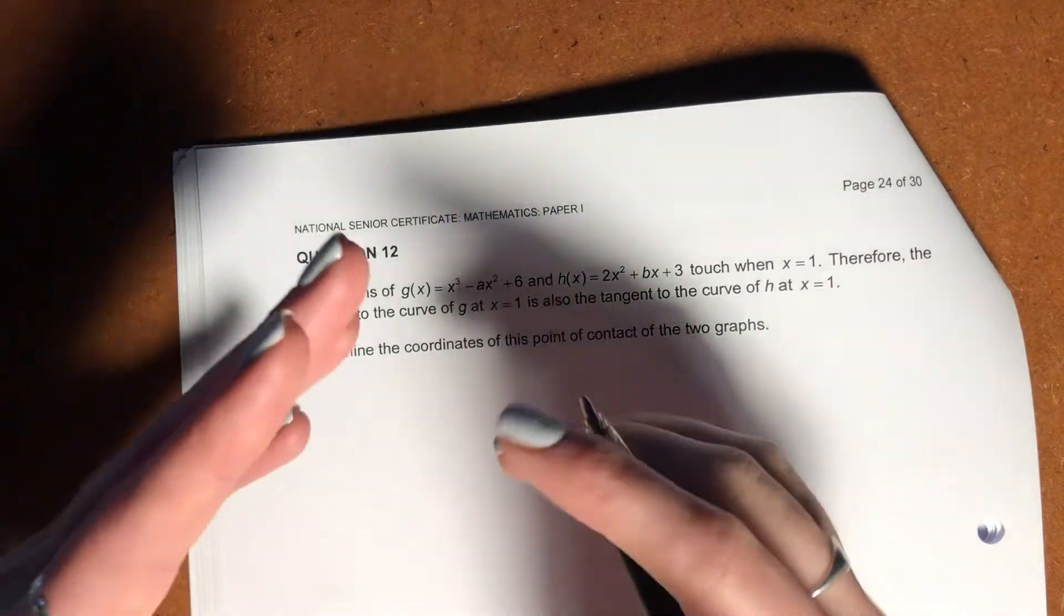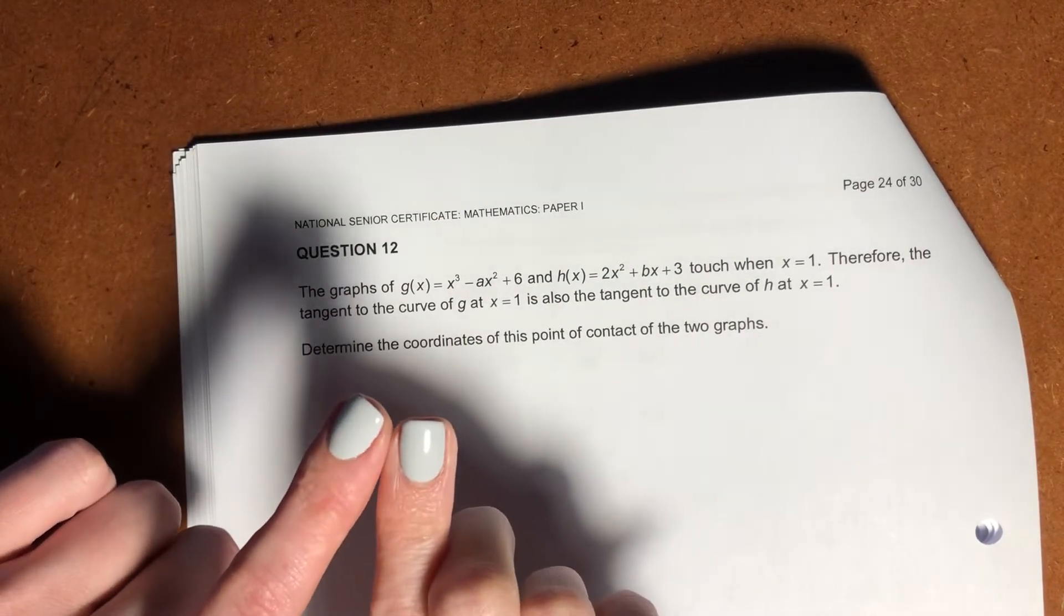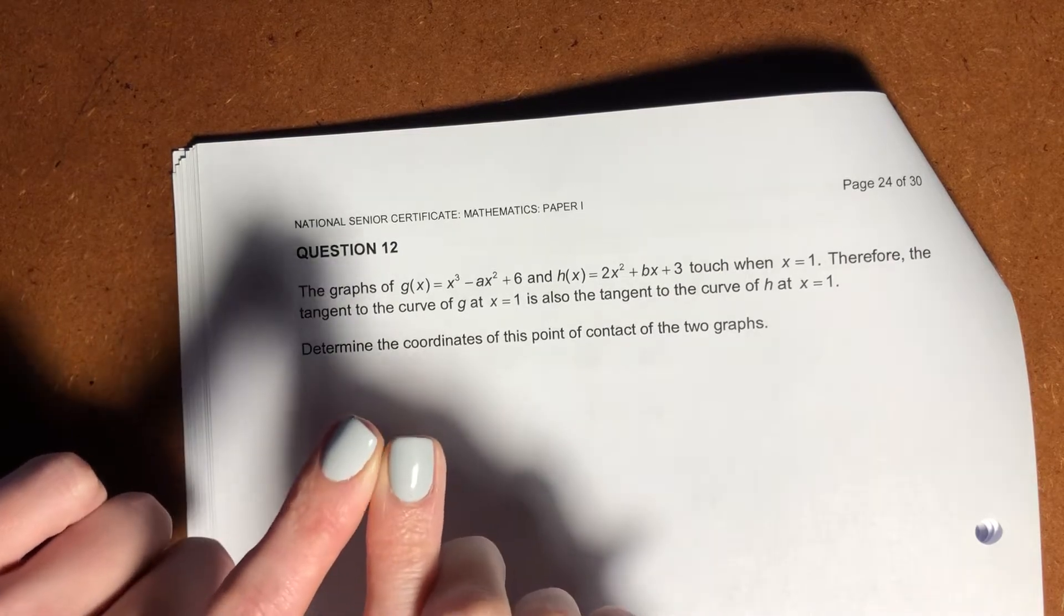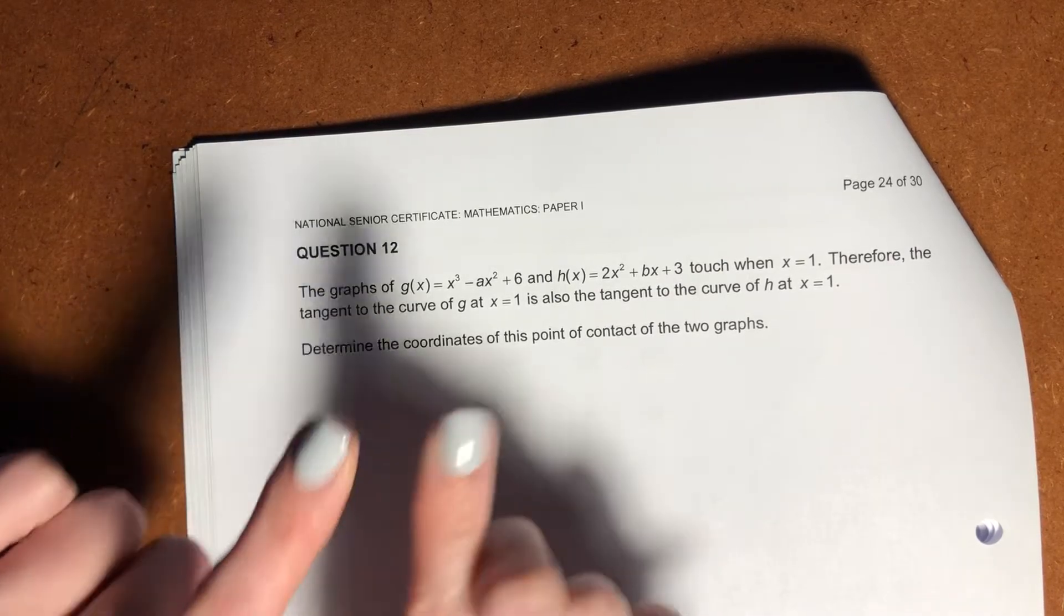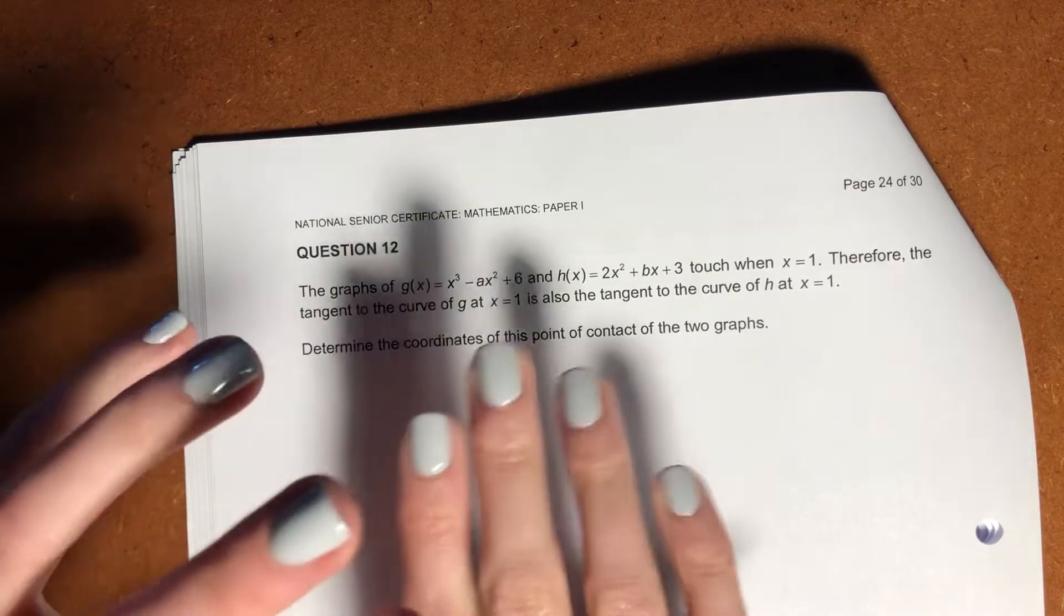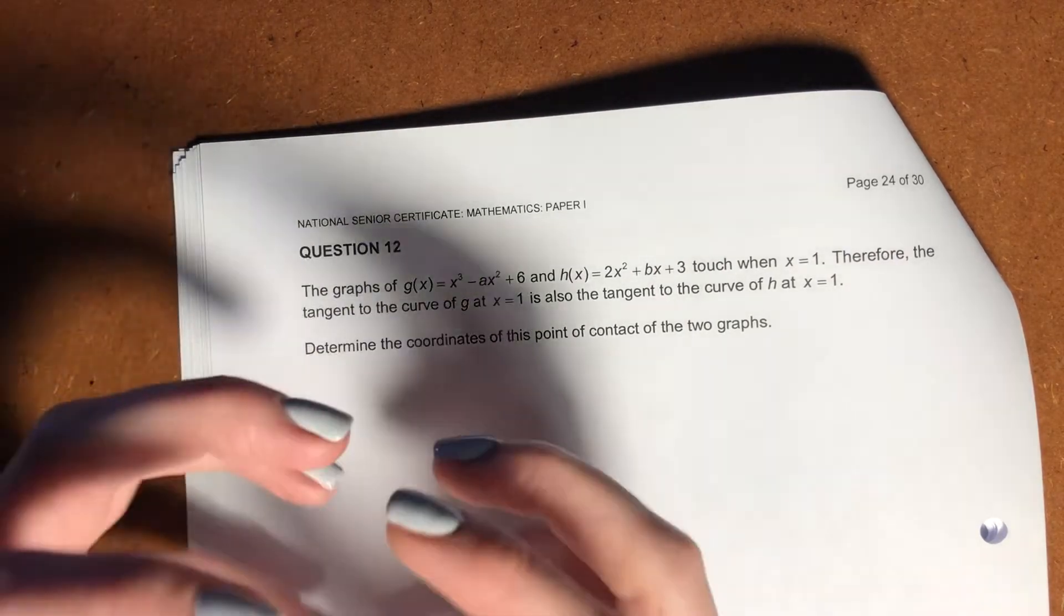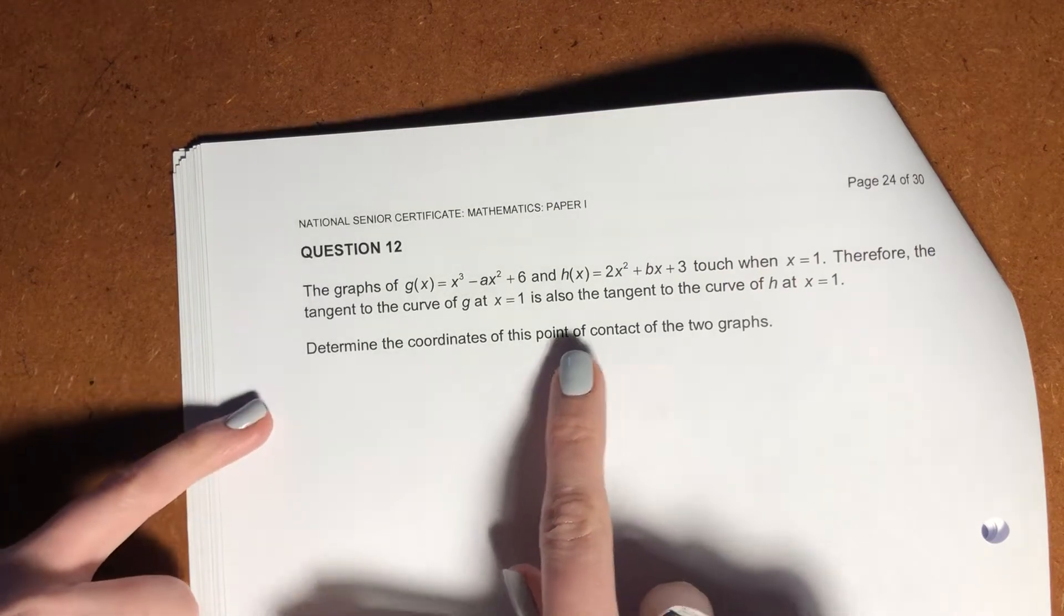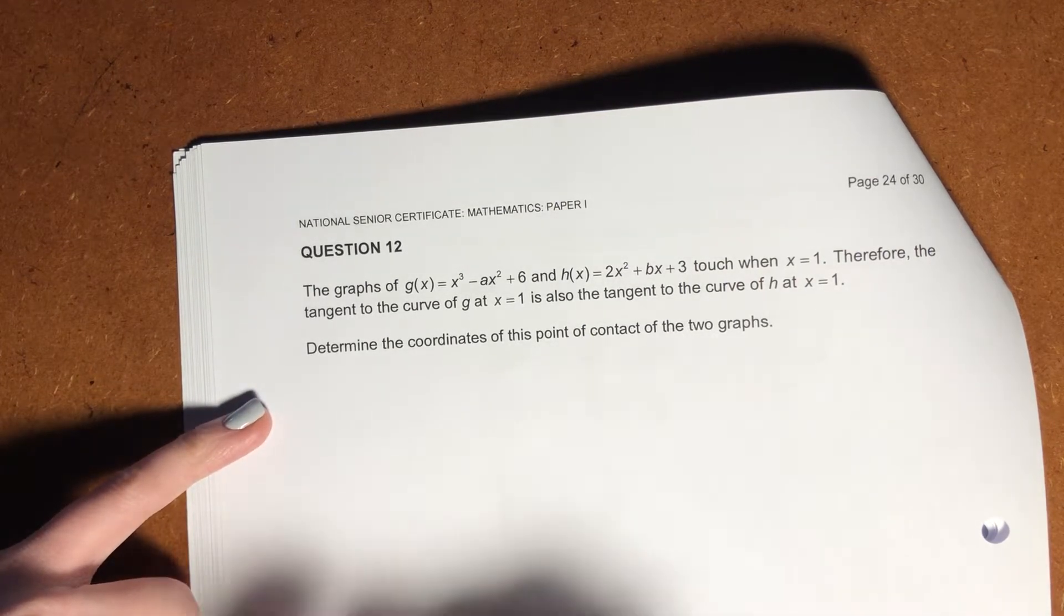So it's basically saying, if you have these two graphs, they touch each other, right? So at that point, they're going to have the same coordinates. But also, if you draw a tangent at that point, it'll be the same for both those graphs. Okay, so it's basically talking about elements of equality between these two functions. Then it says, determine the coordinates of this point of contact of the two graphs.